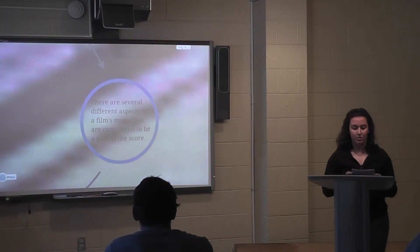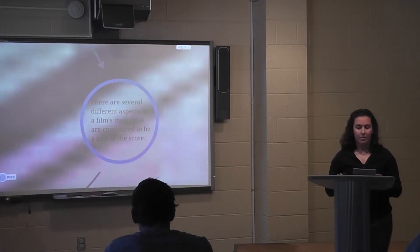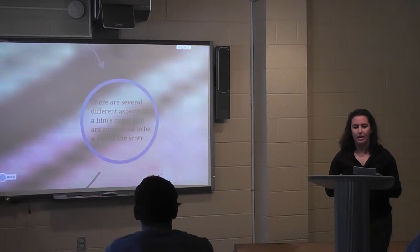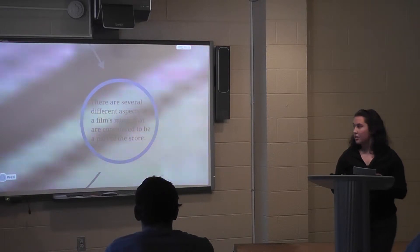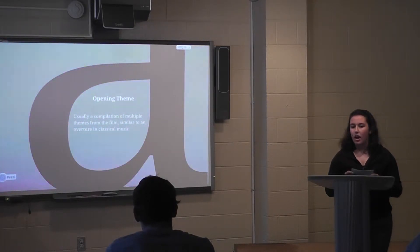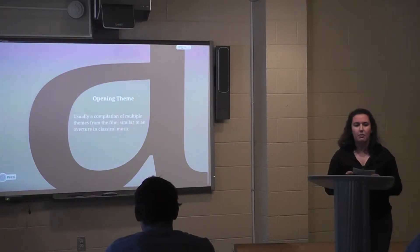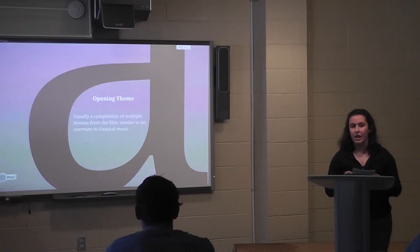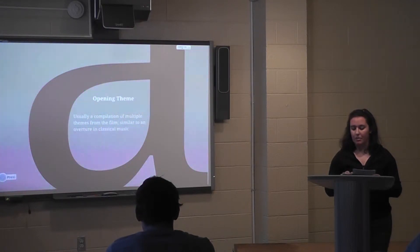Now we're going to talk about what makes a film score. There are about four main parts — there can be more, but four main parts to a film score. One of them is the opening theme. The opening theme consists of several different parts of the film score, similar to the overture in classical music, where it's a compilation of several different parts of the film score.